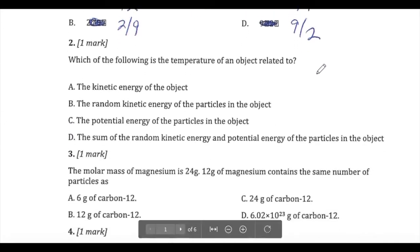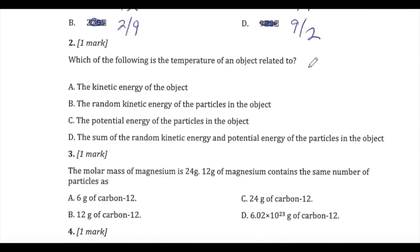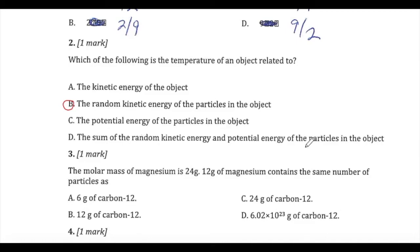Question two asks what the temperature of an object is related to. The answer is B. You cannot say temperature is energy. Some people suggested D, but that defines internal energy — the sum of kinetic and potential energies of the particles. The question is asking about temperature specifically, so the wording is important.